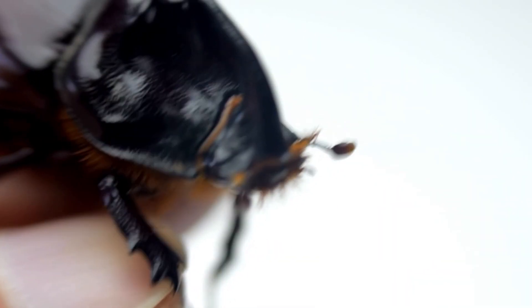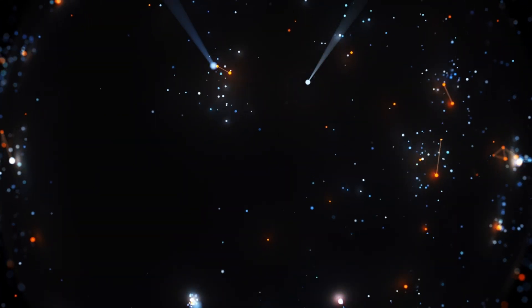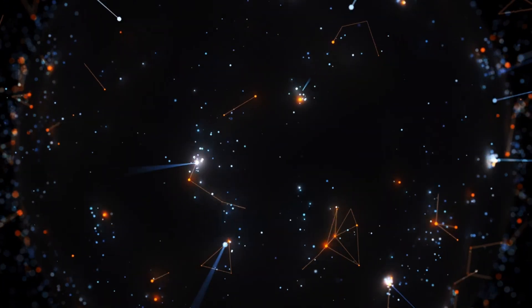This sudden brightening has also sparked renewed interest in studying other red supergiants. While Betelgeuse is one of the closest and most prominent examples, there are many other stars in the Milky Way that are in a similar stage of their life cycle. If Betelgeuse's behavior is indicative of a previously unknown phase of red supergiant evolution, it could lead to a broader re-evaluation of our understanding of how these stars behave as they approach the end of their lives.